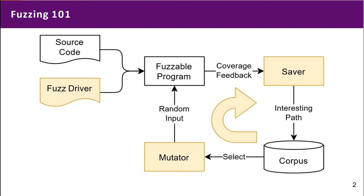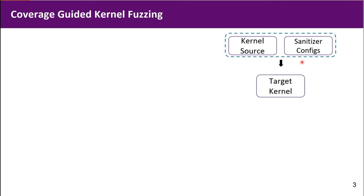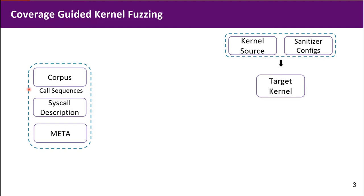However, this becomes different and difficult when it comes to kernel space fuzzing. Here is the basic introduction to kernel space fuzzing. We first compile kernel source and sanitize the config. Then we use corpus, which contains call sequences. I will talk about this later.